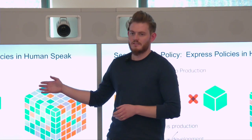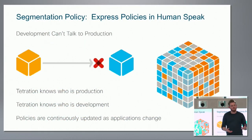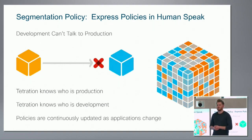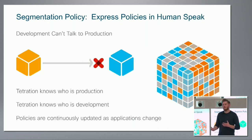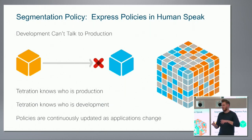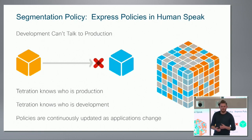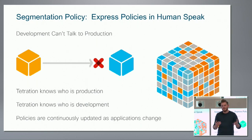You can write policy that is not linked to forwarding attributes. Because we know the identity of endpoints, you can write simple statements like 'production doesn't talk to non-production.' Deploying that in a traditional network requires making ACLs, working out which IP addresses match production and non-production, then changing those every time someone makes a change. Using the identity repository, Tetration constantly updates what the rules resolve into.